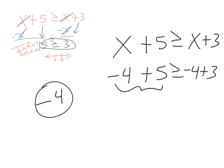Now, negative 4 plus 5 is a positive 1. Bring down the inequality. And negative 4 plus 3 is a negative 1. Therefore, it is true because 1 is greater than or equal to negative 1. So, like I said, you can pick any number and that inequality will be true.